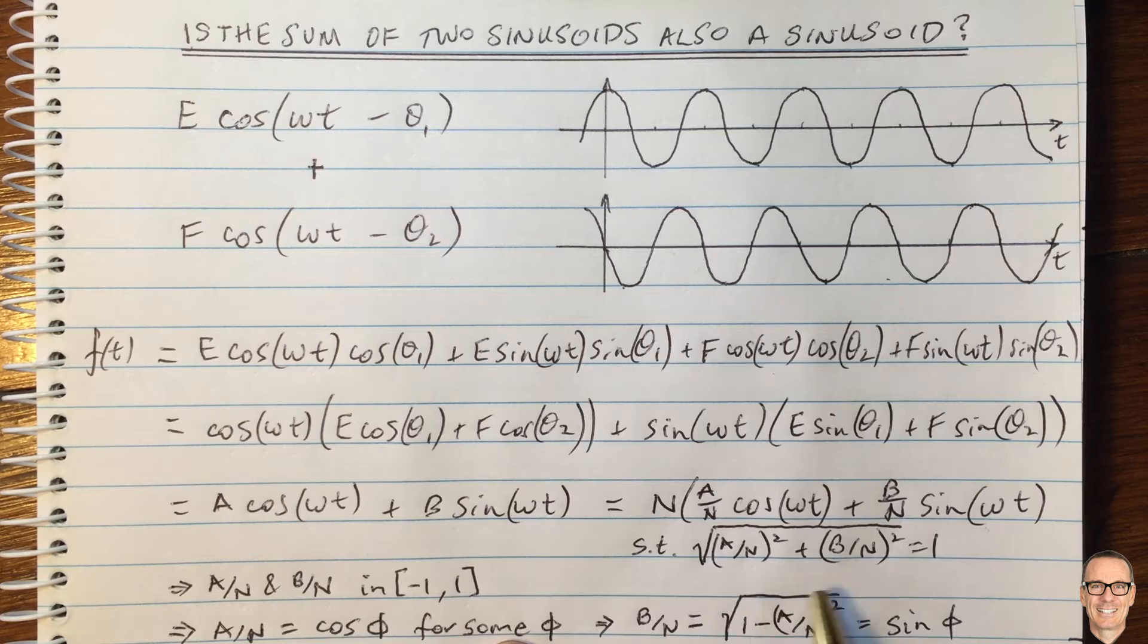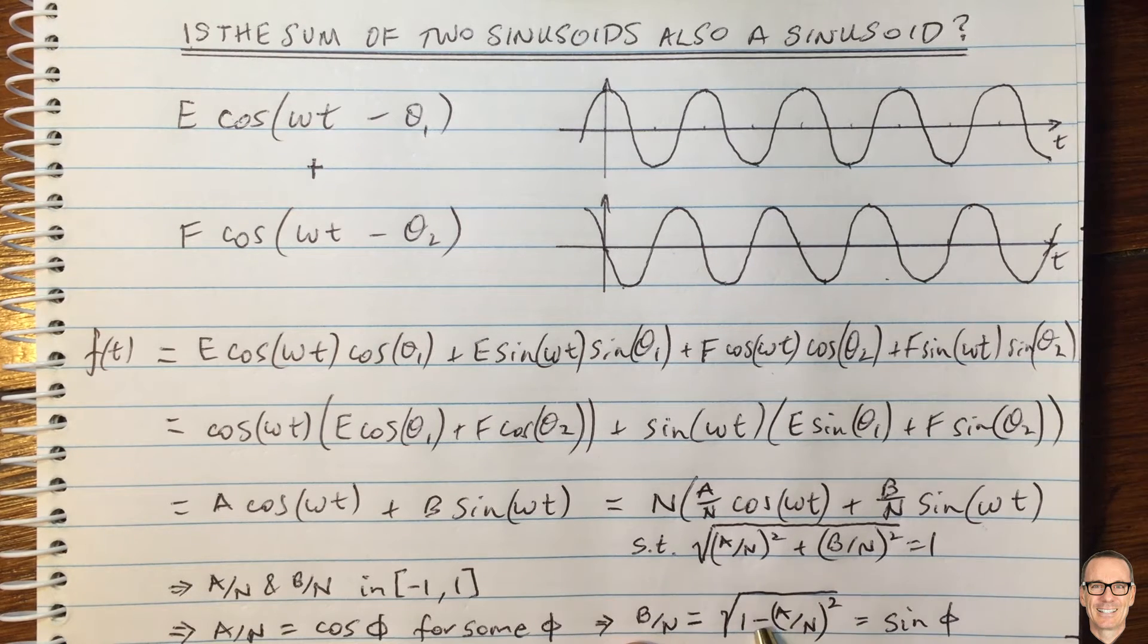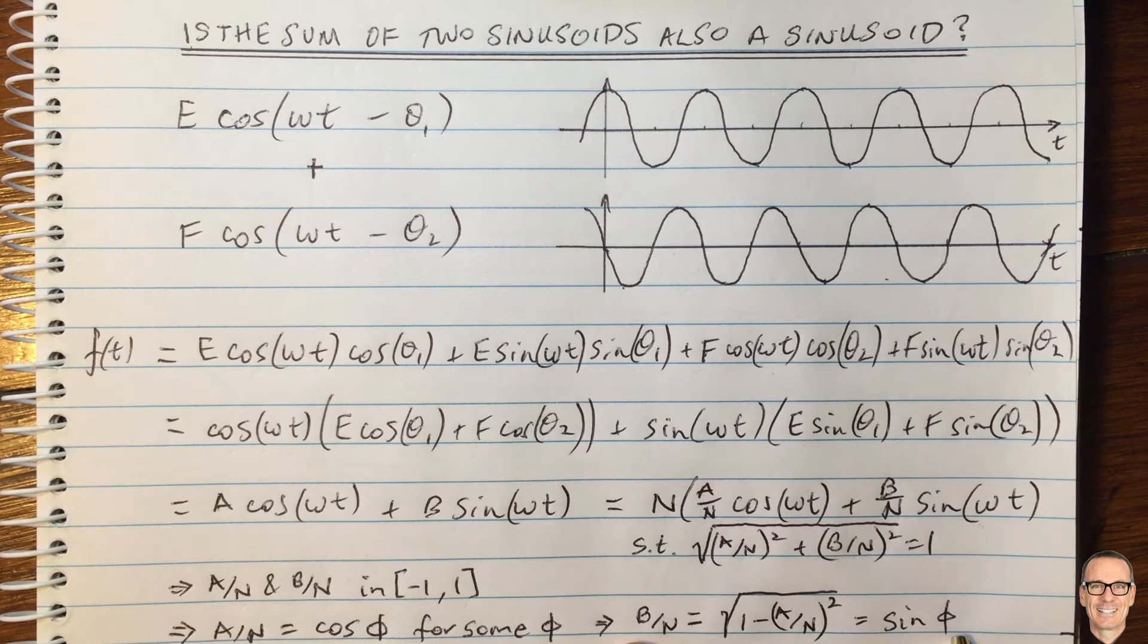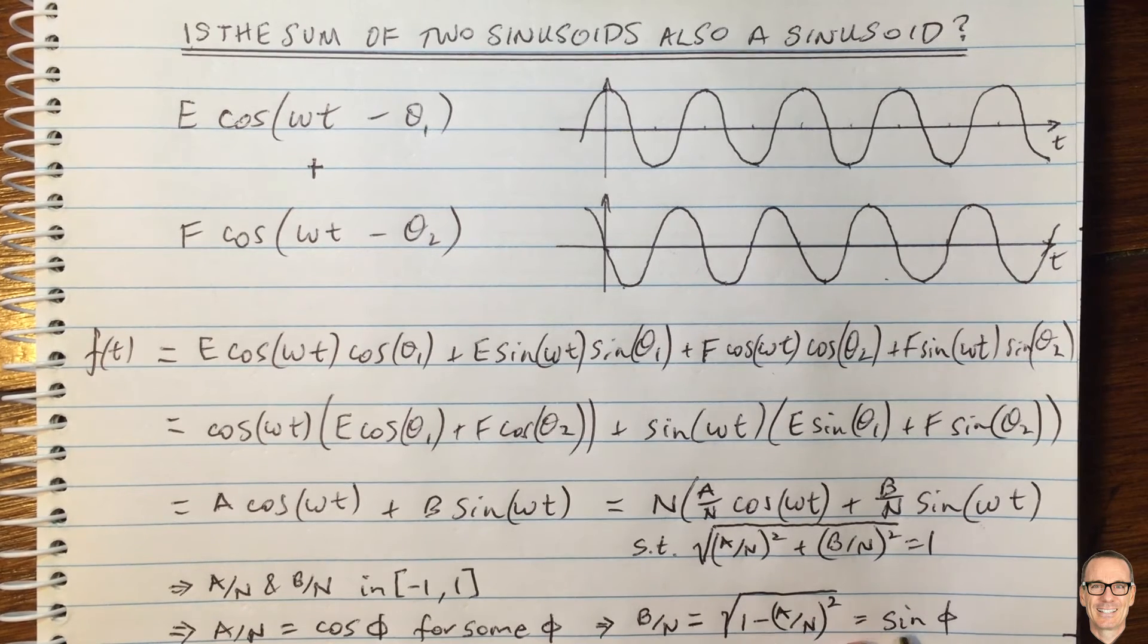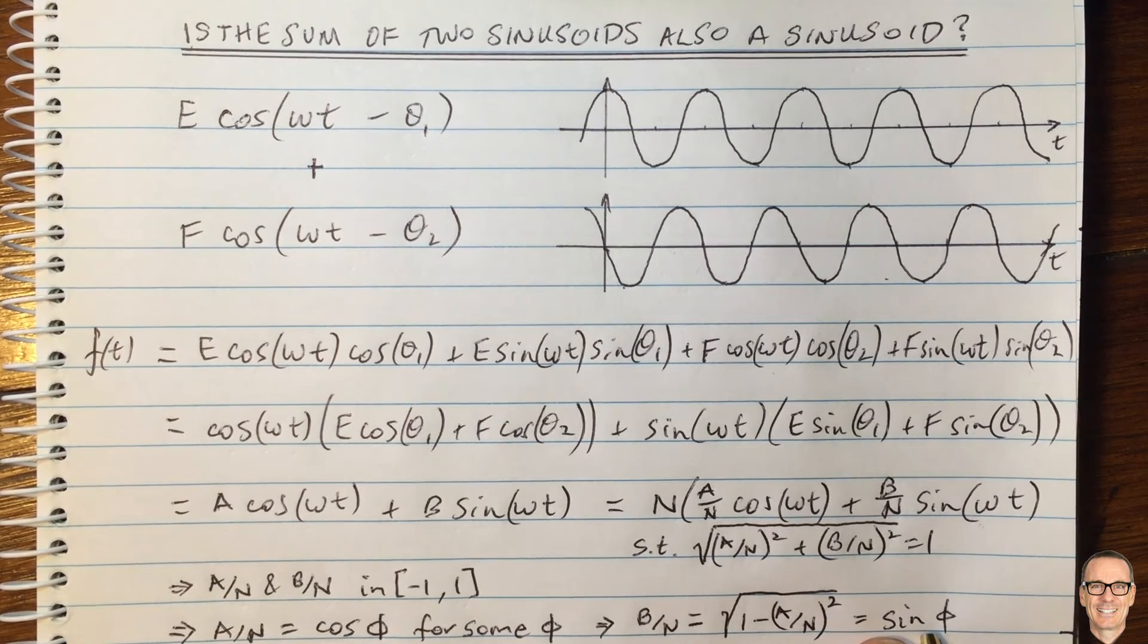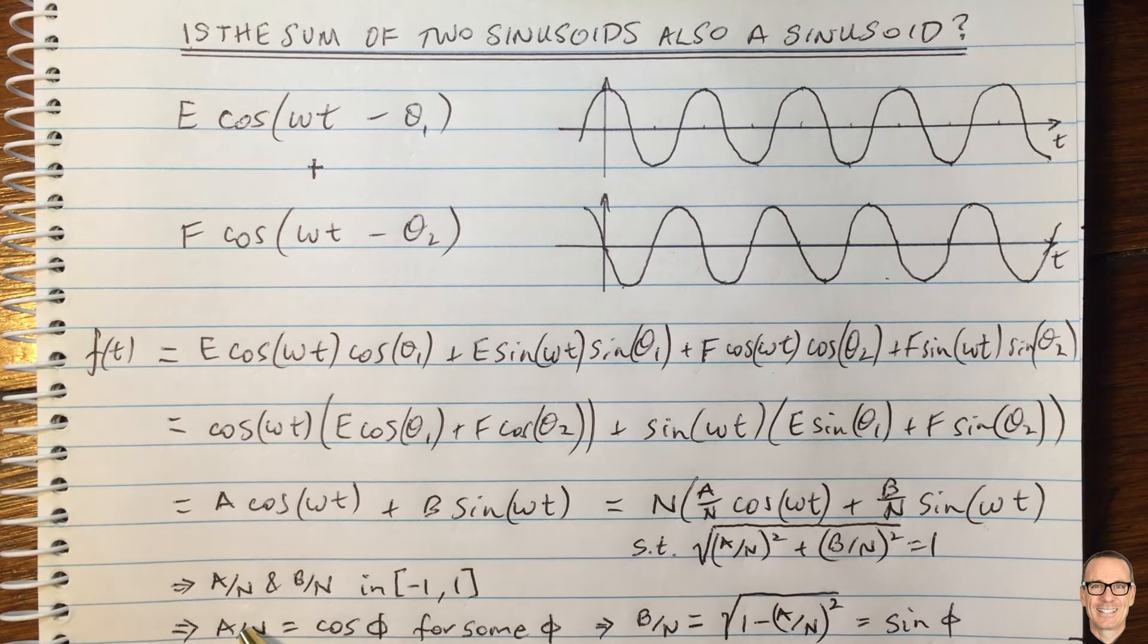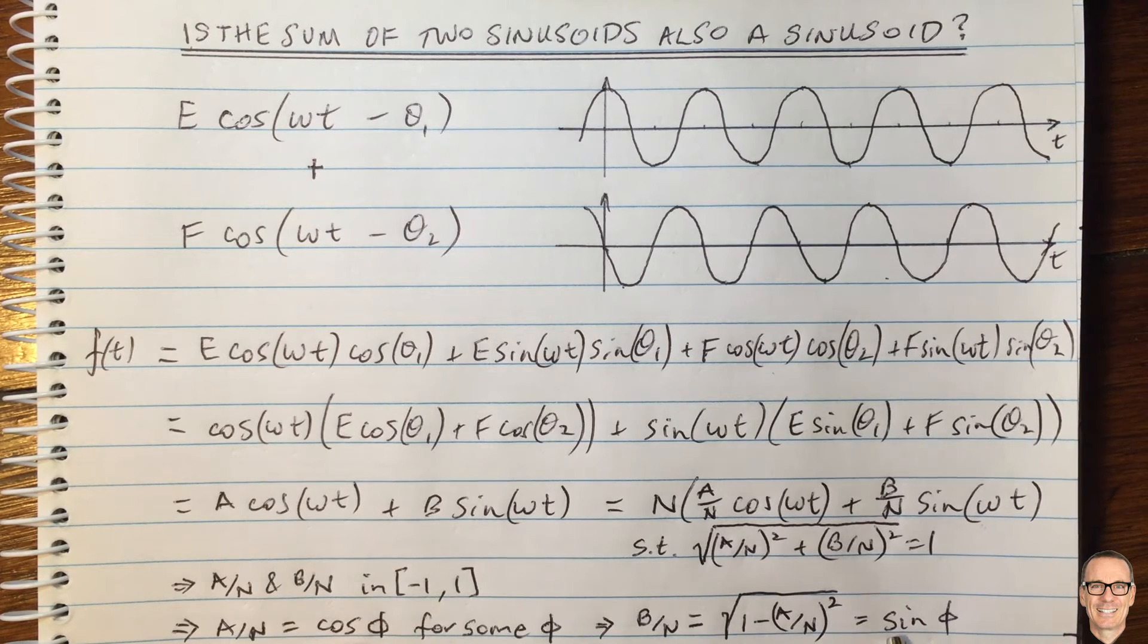Then for that phi, we substitute that into this expression here, and we can find out that B on N equals this term here. You can see by direct substitution, and that equals sine of phi because 1 minus cos squared is sine squared. And then you take the square root, so you get sine of phi. So another trigonometric standard expression. So now we know A on N and B on N in terms of this new cos phi and sine phi.